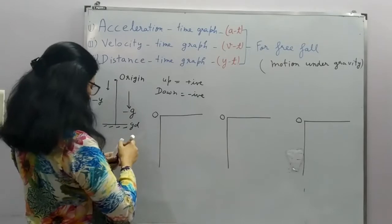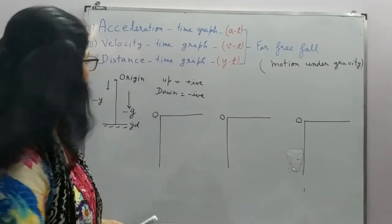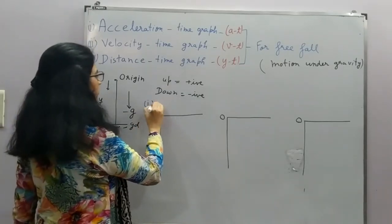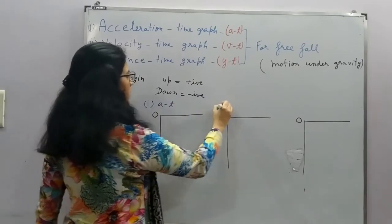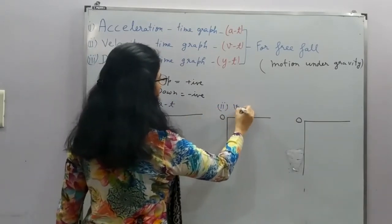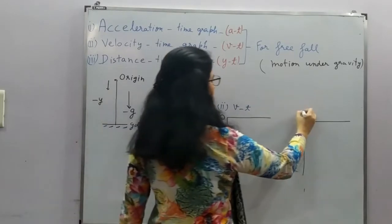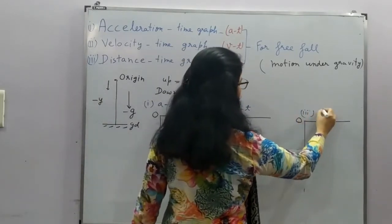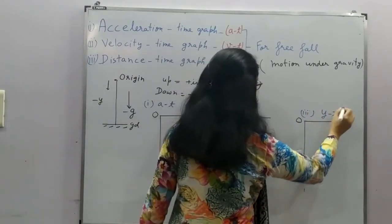So this I am drawing for the first case, that is the acceleration time graph. This I am drawing for the second case, that is VT graph. And this I am drawing for the third case, that is distance time graph.